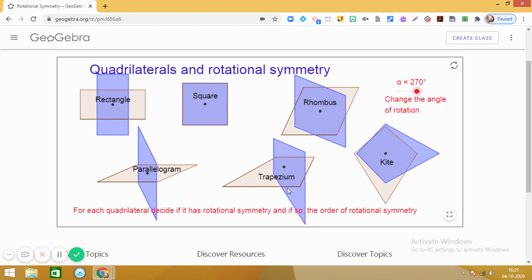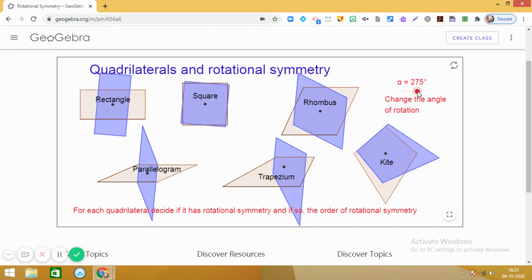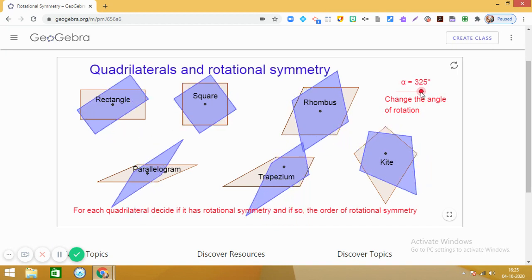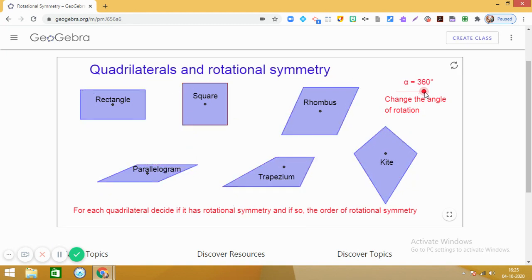Now, in rhombus, parallelogram, trapezium and kite, for 270 degrees, the angle of rotation, this rotational symmetry is not working. Okay, let us continue the process and see what happens at 360 degrees. Okay, so at 360 degrees, you see that all the shapes have come back to their original position.